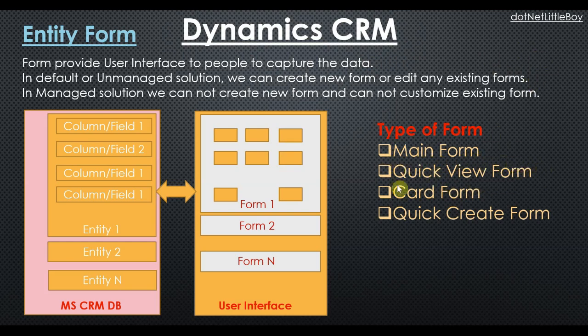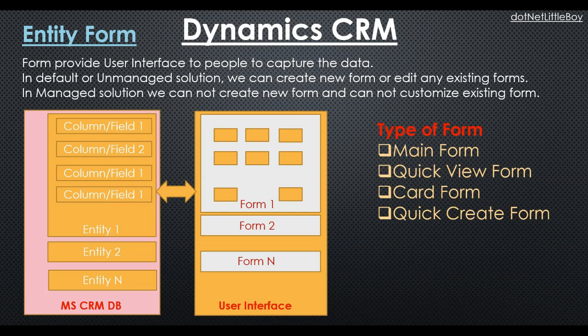I will show a demo of quick view forms in an upcoming video. Card forms are basically used to display data when you have a small screen size, like mobile or tablet. Where there is a requirement for compact display, we design the card form. Quick create forms are used to create records with minimal details from a sub-grid where we have related relationships and want to create related records quickly.